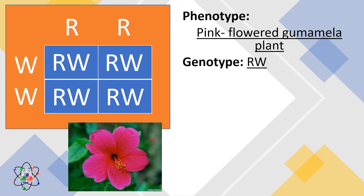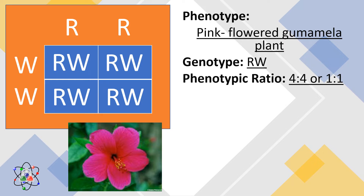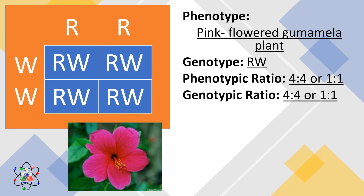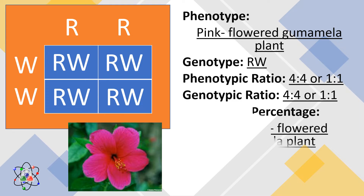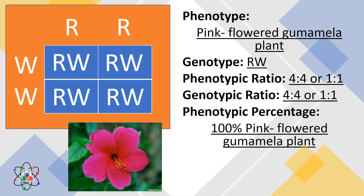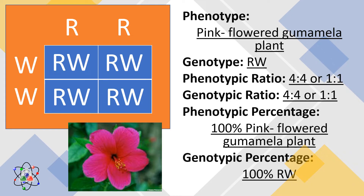Genotype: Rw. Phenotypic ratio: 4 to 4, or 1 to 1, since they are all pink. Genotype ratio: 4 to 4, or 1 to 1, since it is all Rw. Phenotypic percentage: 100% pink-flowered gumamela plant. Genotypic percentage: 100% Rw.